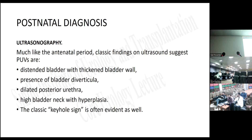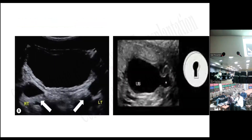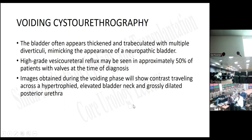For postnatal diagnosis, ultrasonography classic findings suggesting a posterior valve are: distended bladder with thickened bladder wall, presence of bladder diverticula, dilated posterior urethra, high bladder neck with hypertrophy, and the classic keyhole sign. On ultrasound, this shows a distended bladder with thick wall, distal bilateral hydroureter, and the keyhole sign.